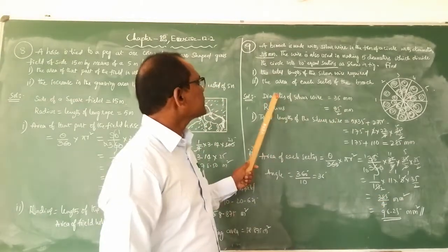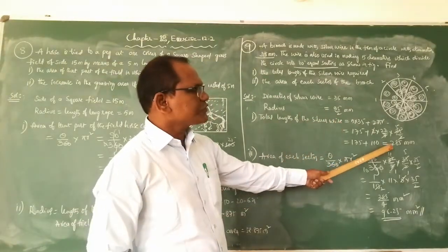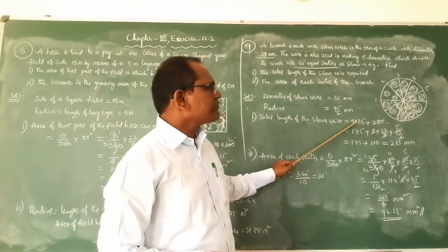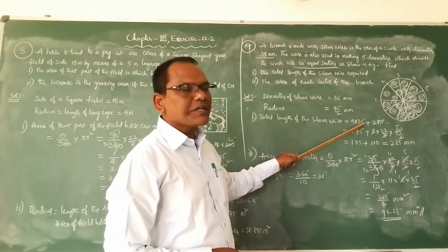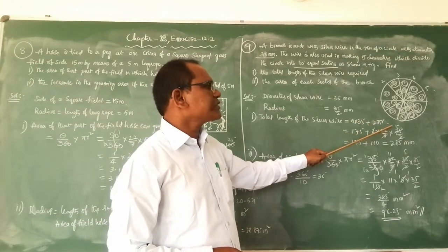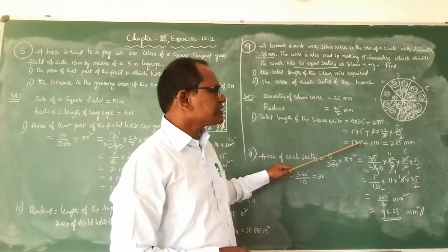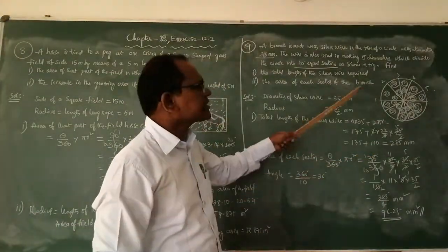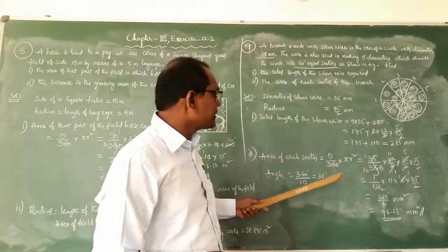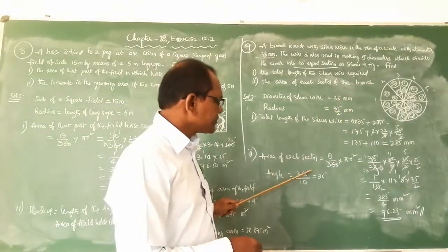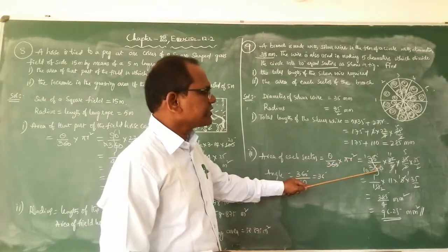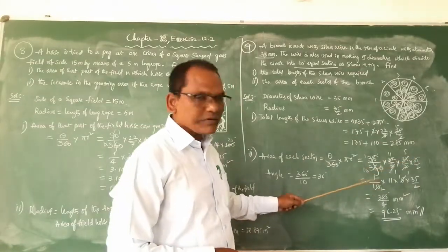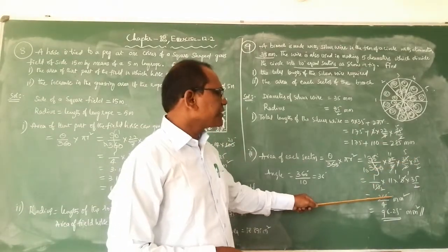The area of each sector is 385/4 = 96.25 square millimeters. Summary of answers: the length of the silver wire required equals 285 mm — that is five diameters (5 × 35 = 170) plus one circumference (110) equals 285 mm. The area of each sector, with 10 sectors in the circle: angle = 360/10 = 36 degrees, area = (36/360) × (22/7) × (35/2)² = 385/4 mm². Thank you, have a nice day.